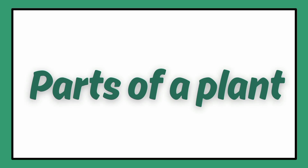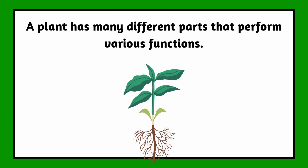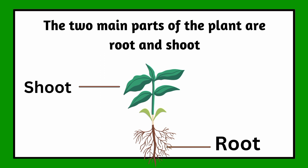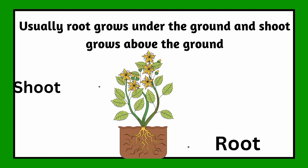Today we are going to learn about parts of a plant. A plant has many different parts that perform various functions. The two main parts of the plant are root and shoot. Usually root grows under the ground and shoot grows above the ground.